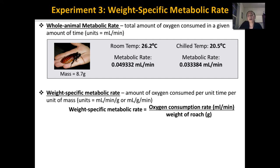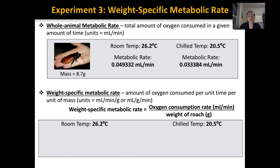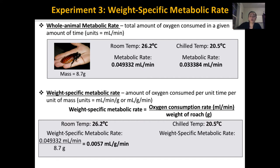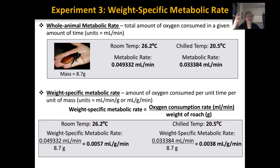Another word for oxygen consumption rate is simply metabolic rate, so you take the metabolic rate and divide by body mass. For our cockroaches, dividing the metabolic rate by a mass of 8.7 grams gives 0.0057 mL/g/min. Do the same for the cold temperature — same cockroach, same mass — and you get the weight-specific metabolic rate in the cold. This weight-specific metabolic rate becomes especially important when we start talking about endotherms.